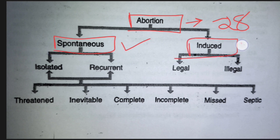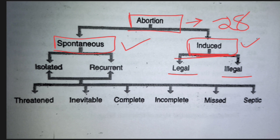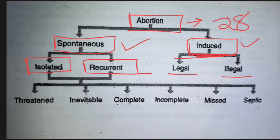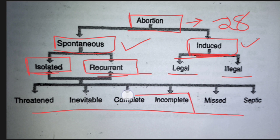Spontaneous abortion has two types: isolated (first time this type of abortion is occurring) and recurrent (second or third time the same type of abortion occurs). These isolated and recurrent types have six subtypes — the first four are very important. Etiology of abortion: one is fetal factor and the other is maternal factor.